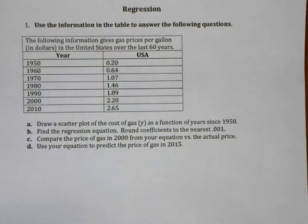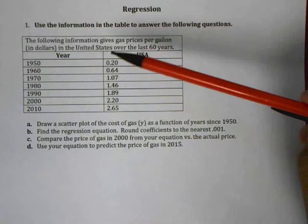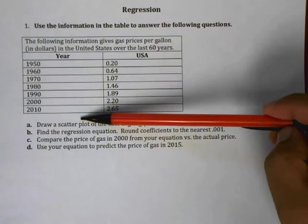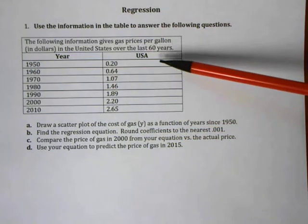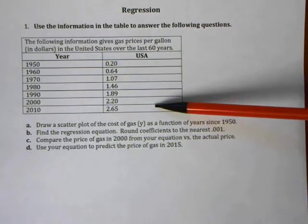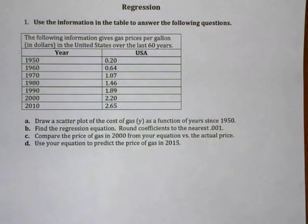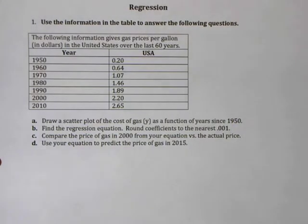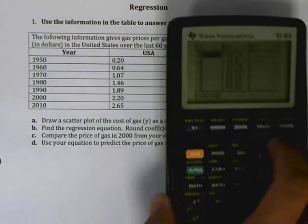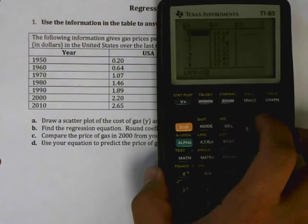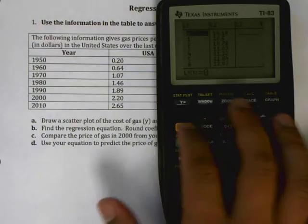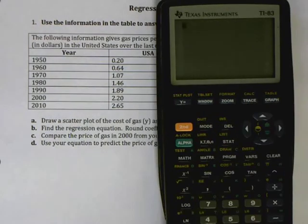I have a problem here with a list of data: years from 1950 to 2010, and gas prices from 1950 through 2010. The first question says: draw a scatter plot of the cost of gas (y) as a function of years since 1950. I'm going to use my graphing calculator to do this work.